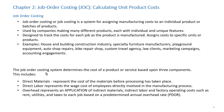As we discussed in the first chapter, direct materials represent the cost of materials which can be traced to the product before processing has taken place. Direct labor represents the wage and benefit costs of employees directly involved in the manufacturing process. And manufacturing overhead represents the indirect materials, indirect labor, and factory operating costs which are applied to the product.